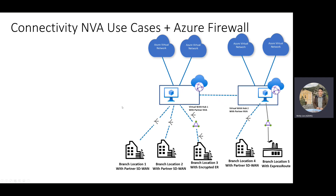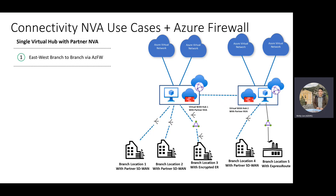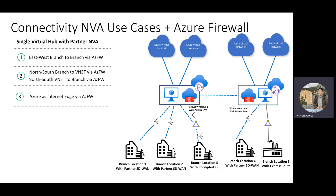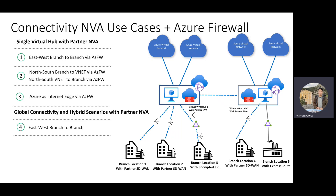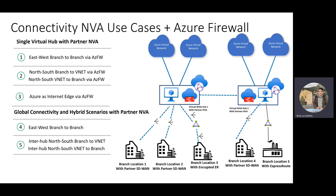Now let's say that the customer wants to add security to their solution, so they decide to deploy an Azure Firewall into the virtual WAN hub. You can get all of the flows we talked about previously to go through Azure Firewall: branch-to-branch via Azure Firewall, branch-to-VNet via Azure Firewall, and you can send internet traffic to Azure Firewall for inspection and then breakout. All of that inter-region goodness also holds — branch-to-branch through firewalls. You can treat each virtual WAN hub as a security boundary so that all packets entering and leaving that region must pass through the firewall.